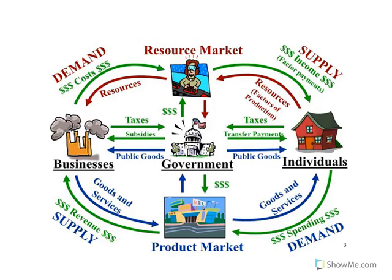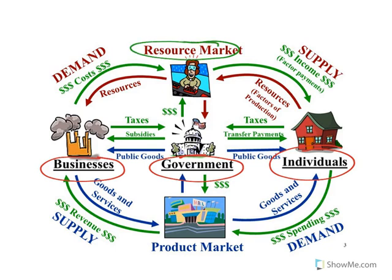Now let's look at the circular flow model, which you can see on the screen. The circular flow model is a way to understand how a market economy works. In this model, we assume three key players: businesses, the government, and individuals — sometimes called households. These three groups participate in two kinds of markets: the resource market, or factor market, and the product market.